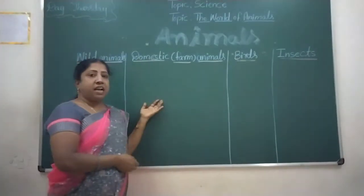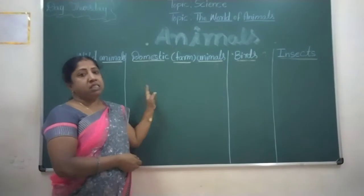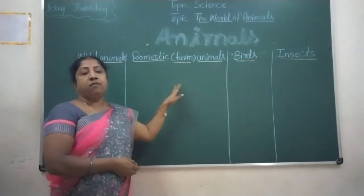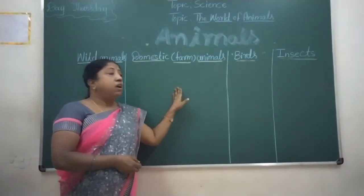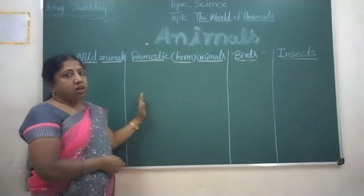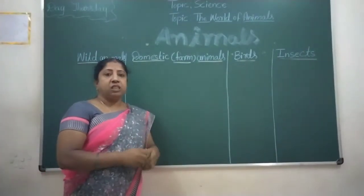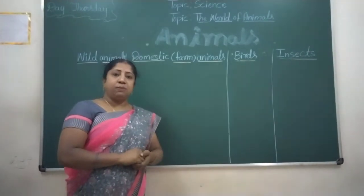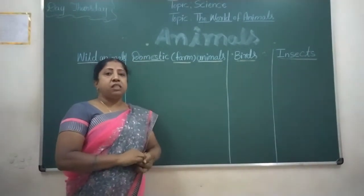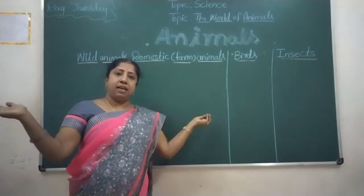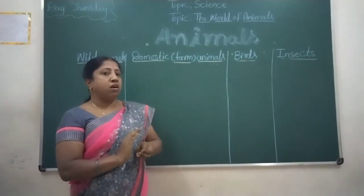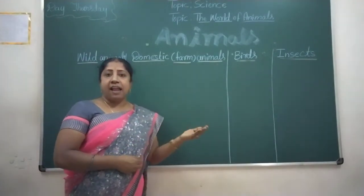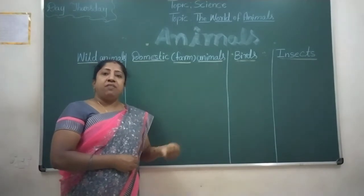We see different kinds of animals around us. They are found everywhere in the world. Animals are found in different shapes and sizes. Some animals are big and some animals are smaller. Some animals are living on land, some animals are living in water.